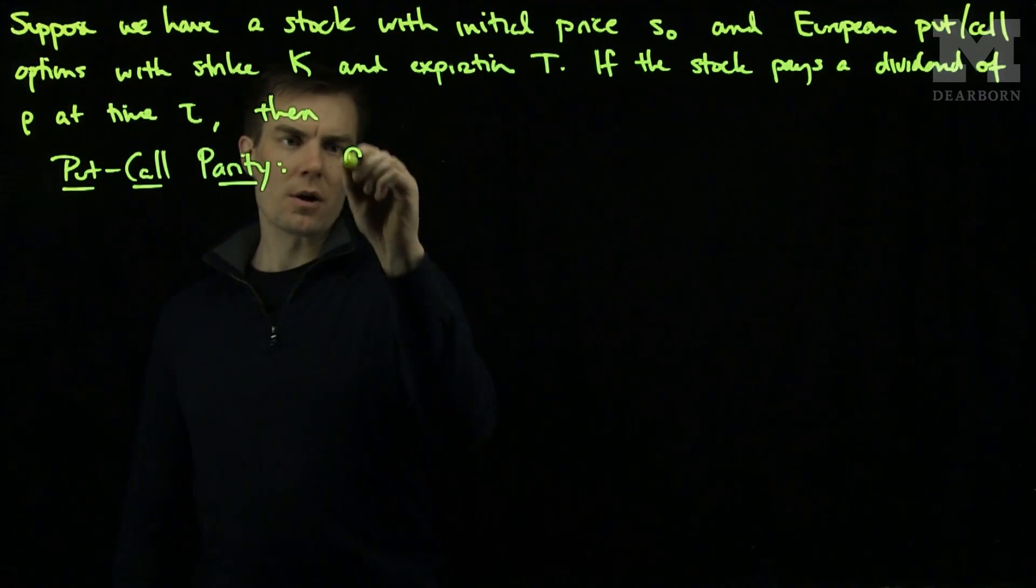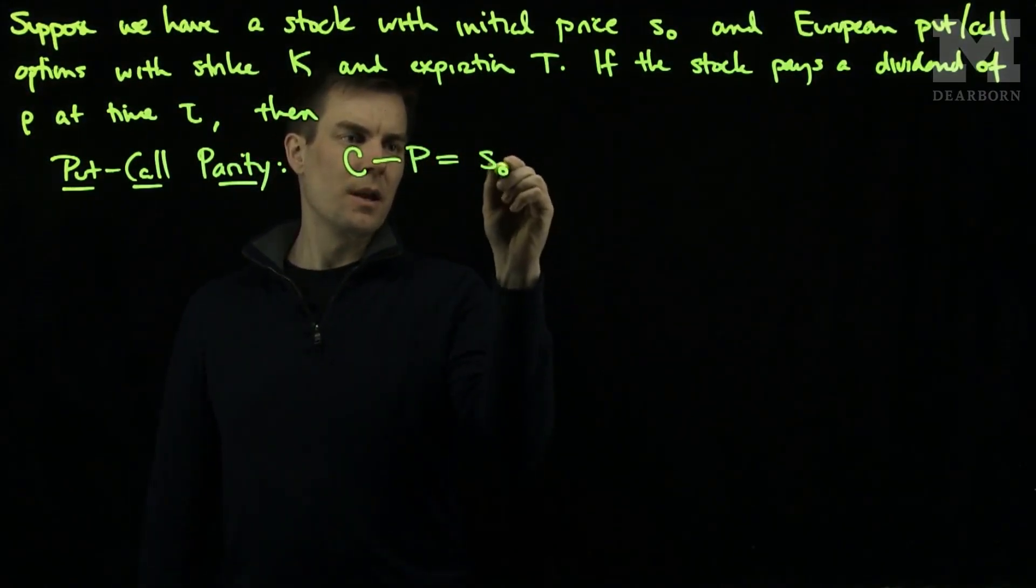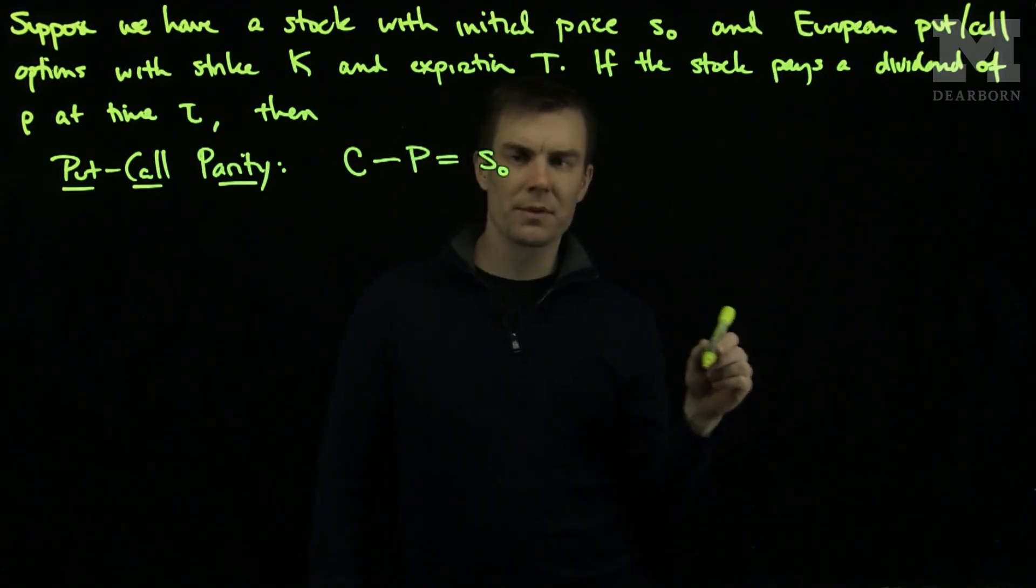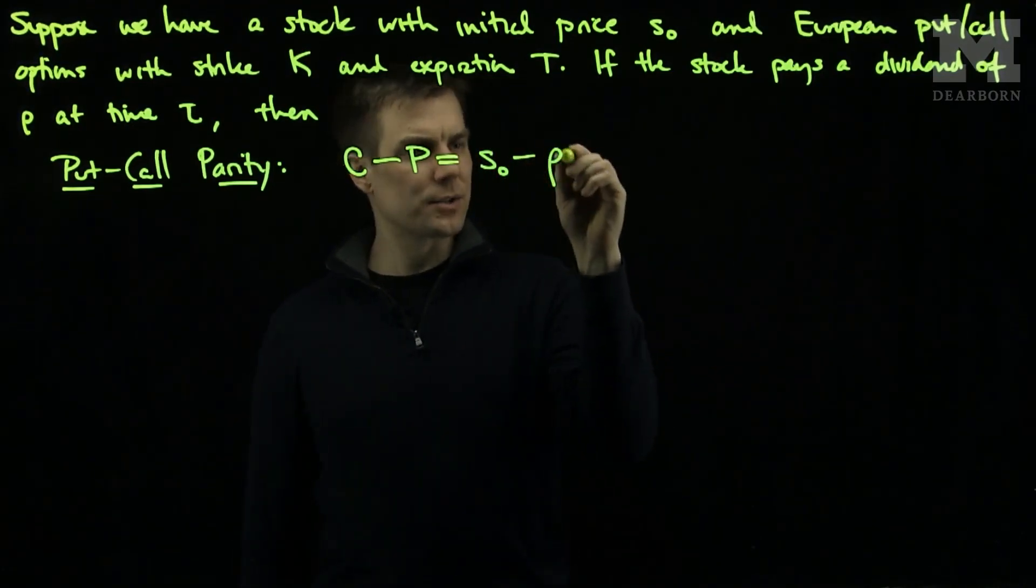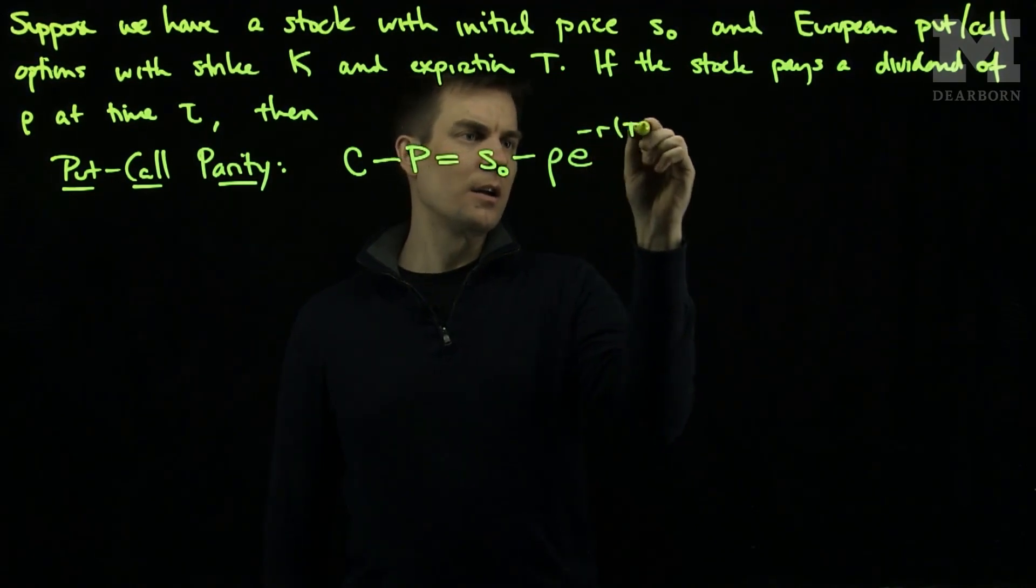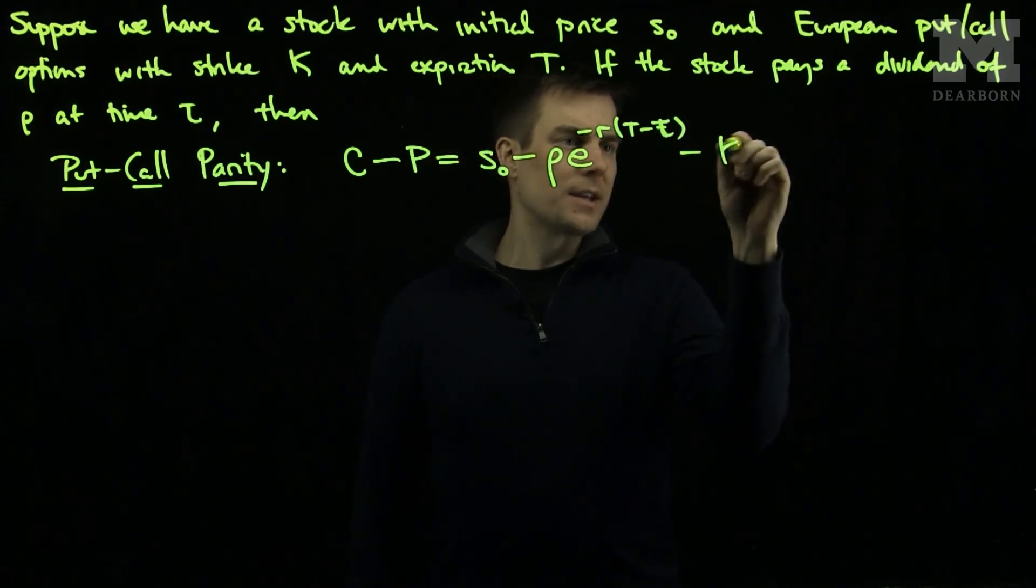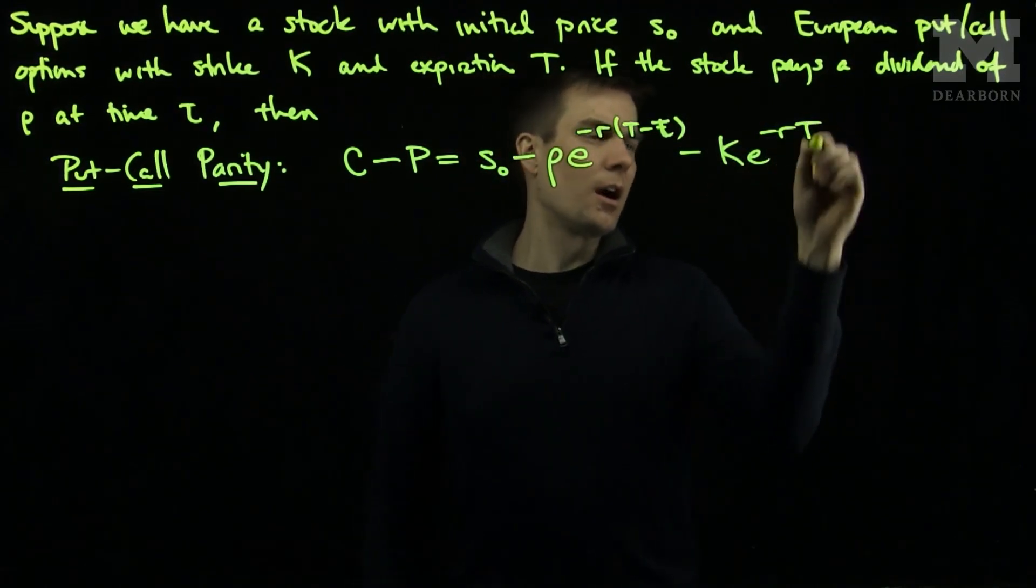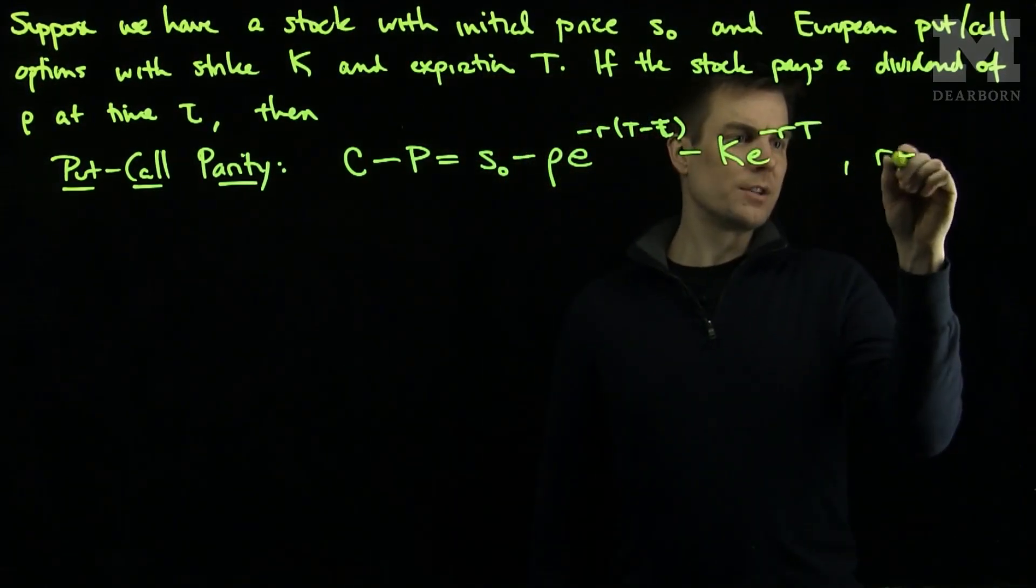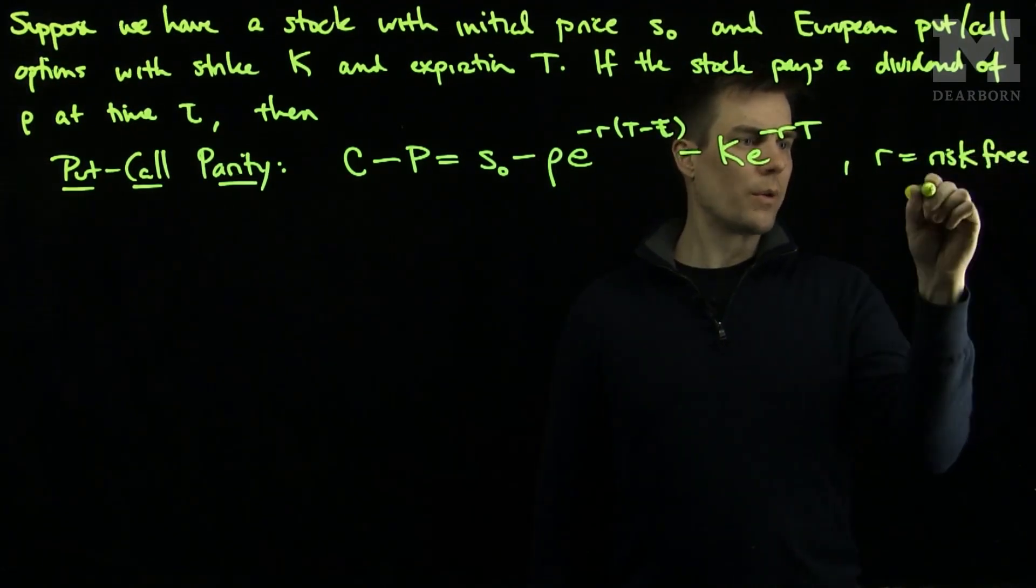Put-call parity will read as follows: the call option price minus the put option price is the initial value of the stock minus rho e to the minus r times (t minus tau), minus K e to the minus rt, where r is the risk-free rate of return.